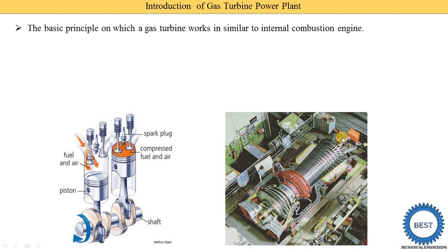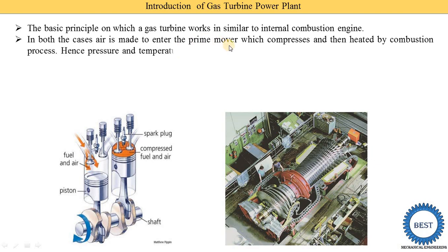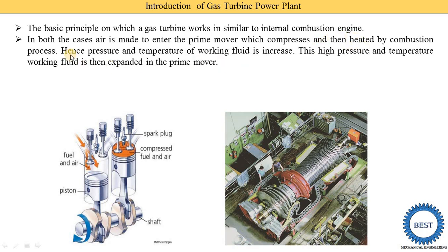The turbine produces work which is supplied to run the compressor, and some work is also supplied to the generator, which produces electricity. In both cases, air enters the prime mover where compression takes place, then it is heated by the combustion process. First is the suction process, then compression, then combustion — during combustion the pressure and temperature of the working fluid increase.